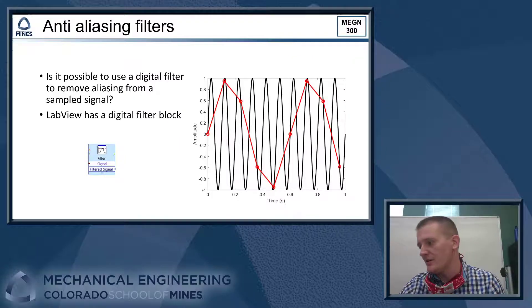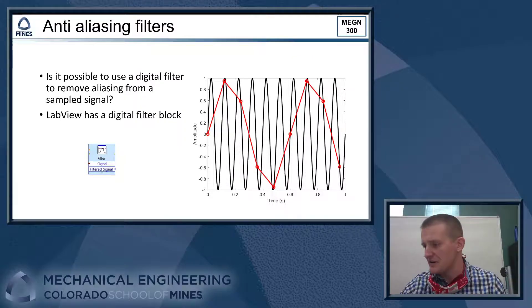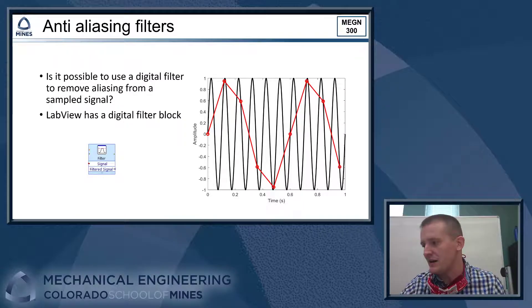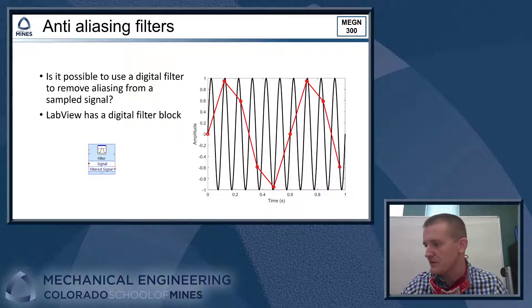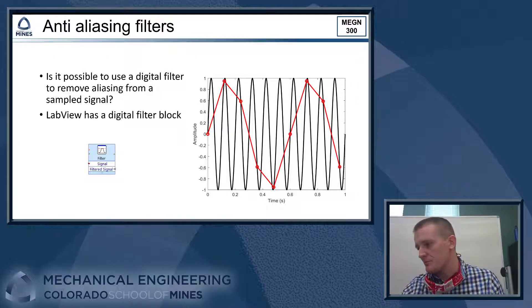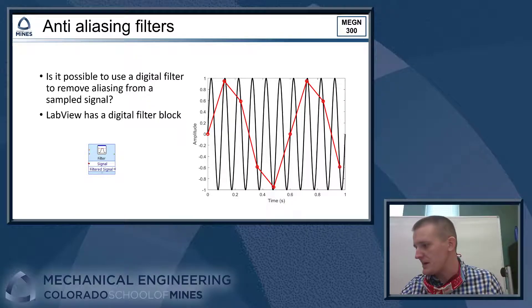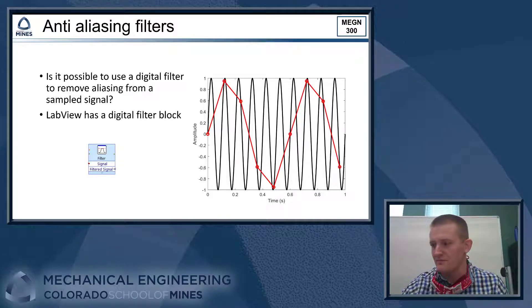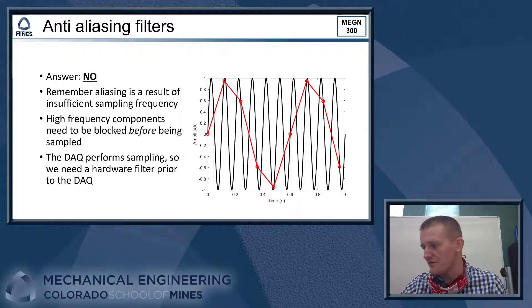All right. So here's a question that we oftentimes ask: if you go into LabVIEW, there's actually a filter block in there and you can set up a low-pass filter, remove high frequency components from your collected data in LabVIEW. And that's really nice. It's easier to set up than an analog filter. You don't have to mess around with the breadboard or getting resistors or capacitors or anything like that. Could we just use that to make an anti-aliasing filter? The answer to that is no, definitely not.